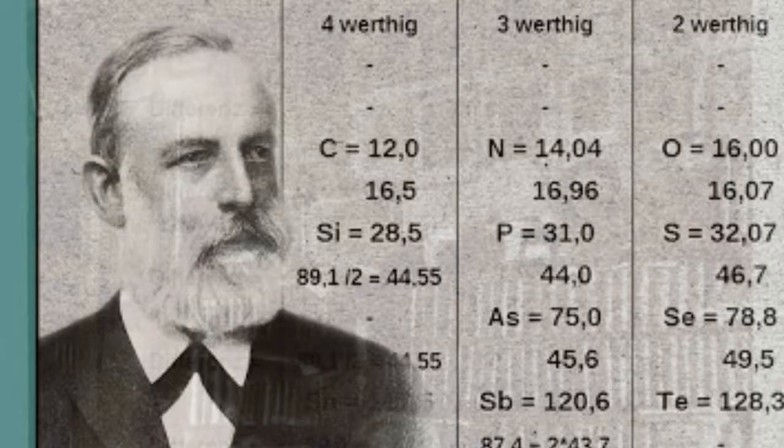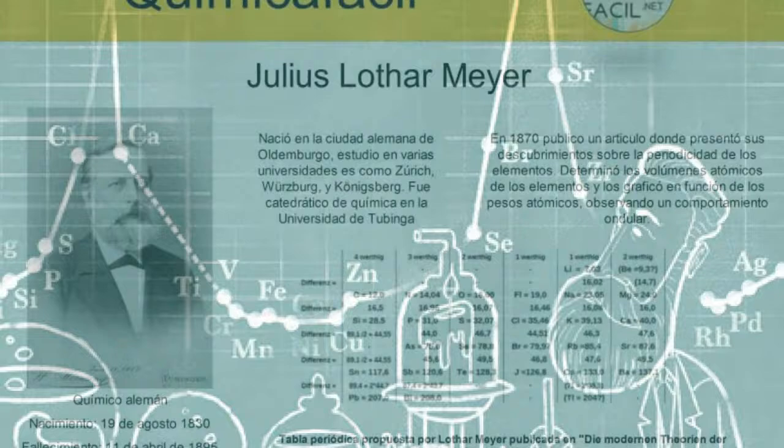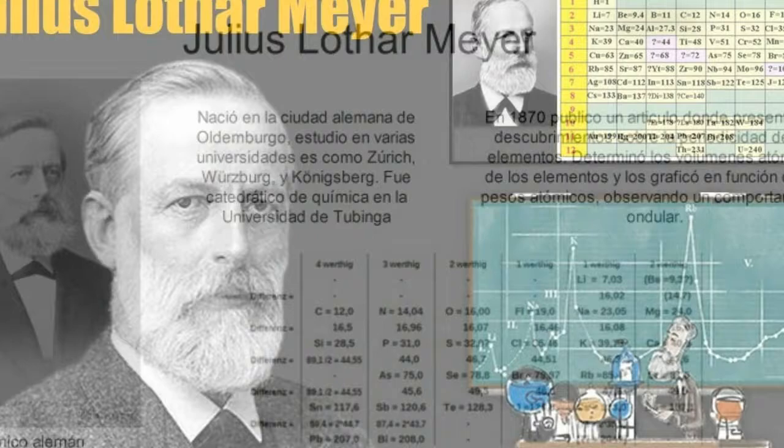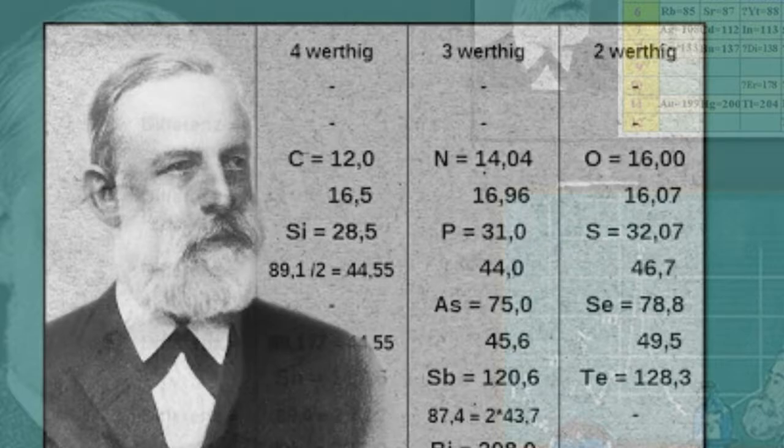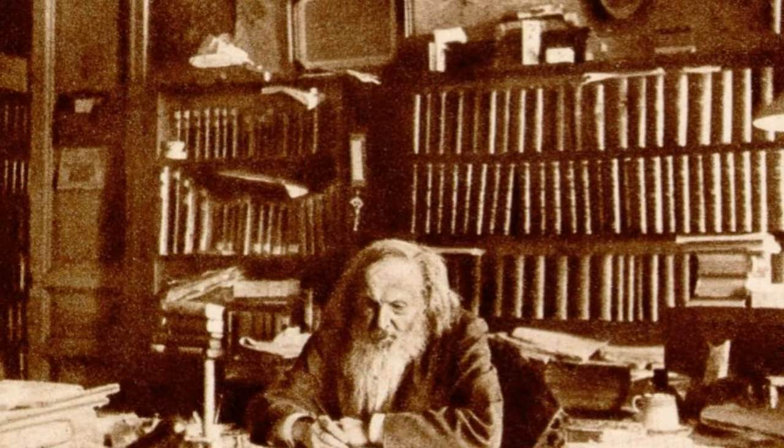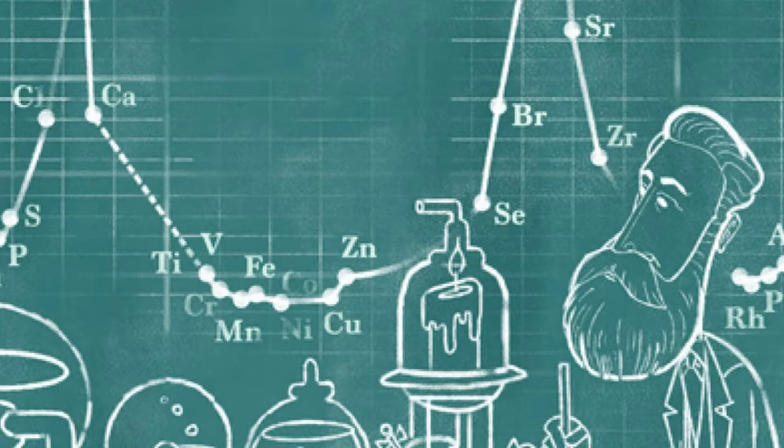In 1866, Meyer accepted a post at the Eberswald Forestry Academy at Neustadt-Eberswald, but two years later was appointed to a professorship at the Karlsruhe Polytechnic. In 1872, Meyer was the first to suggest that the six carbon atoms in the benzene ring, proposed a few years earlier by August Kekulé, were interconnected by single bonds only, the fourth valence of each carbon atom being directed toward the interior of the ring. During the Franco-German campaign, the Polytechnic was used as a hospital, and Meyer took an active role in the care of the wounded.